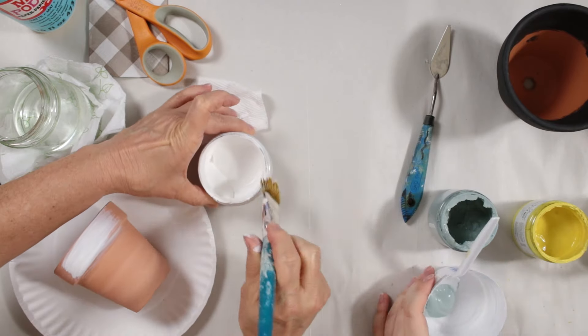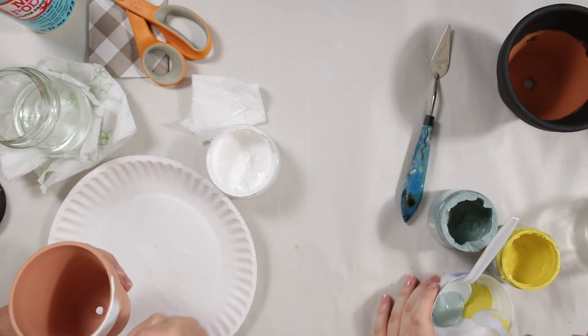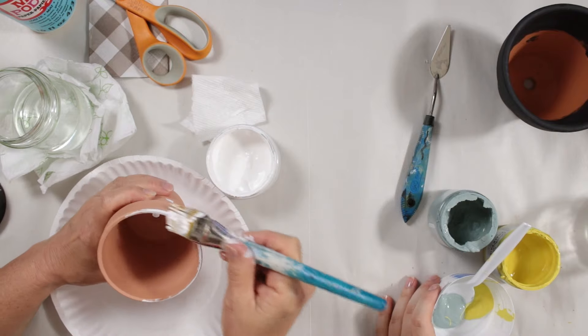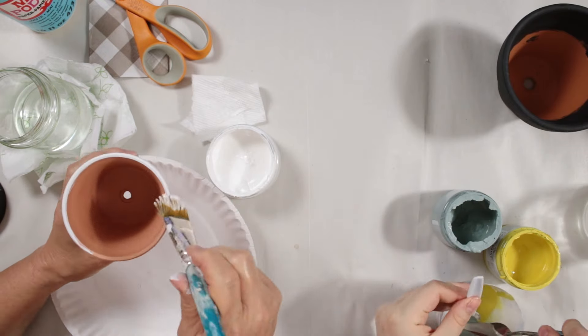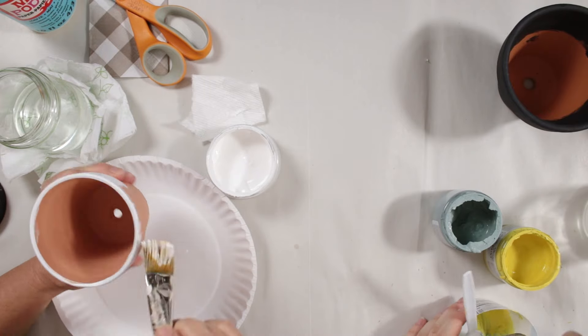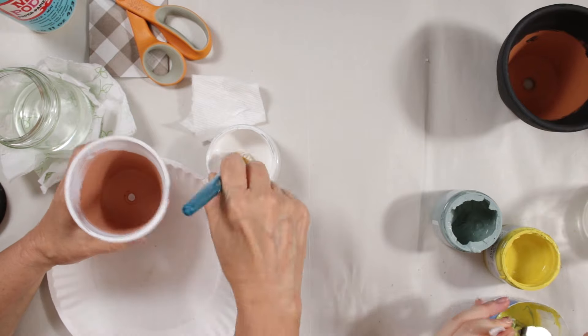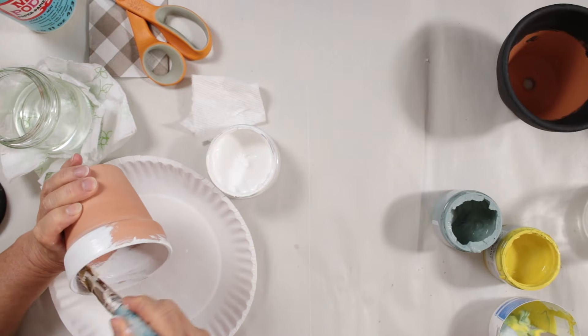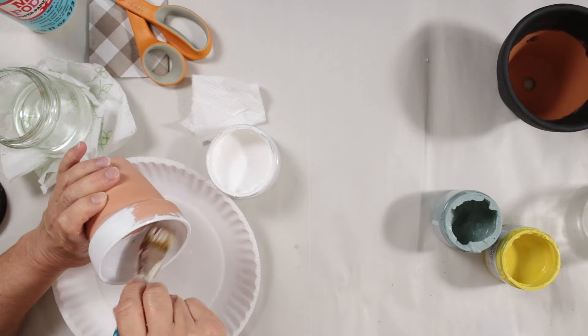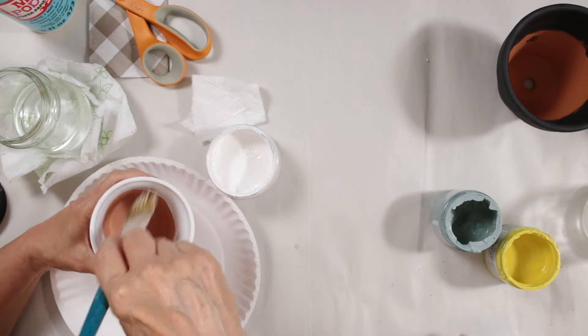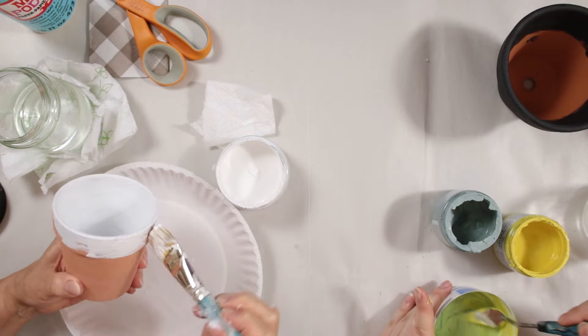So I'm combining the Annie Sloan Duck Egg Blue with some of the English Yellow to create kind of a sea foam green color. I'm also applying a little water to thin out my blue paint. That's one of the great things about chalk paint: if they're a little too thin you can leave them out and they'll thicken up. Or if they're too thick you can add a little bit of water to thin them out.